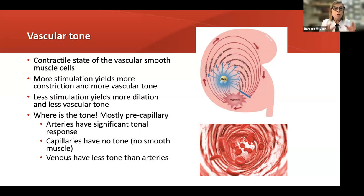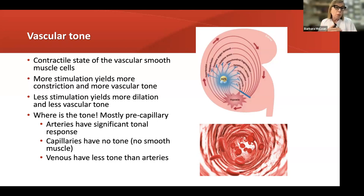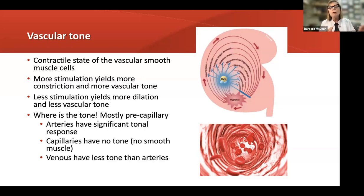The majority of tonal responses are in the artery — there is no tone in the capillary; it's all dependent on pre-capillary pressure and pre-capillary volume. The veins do have some tone and will respond when you add a vasoconstrictor like norepinephrine or epinephrine, but the venous constriction will not be nearly as profound as the arterial response to vasopressors.